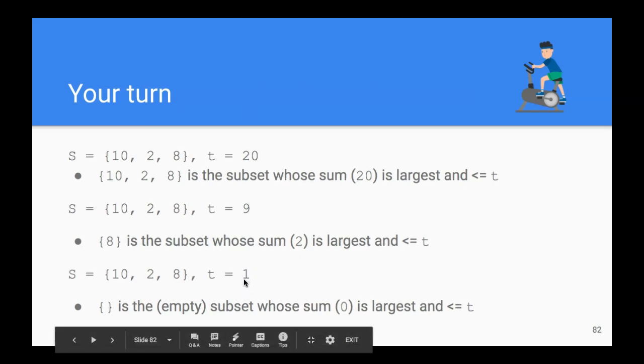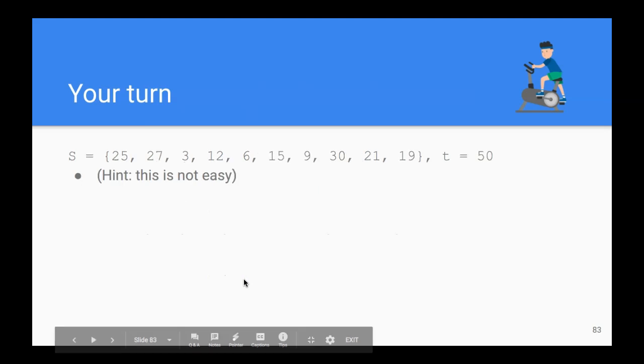Let's do something a little more complicated. Given this large, or relatively large S, that has these many numbers and our target is 50, try to find a subset of these numbers that is as close to 50 as possible.